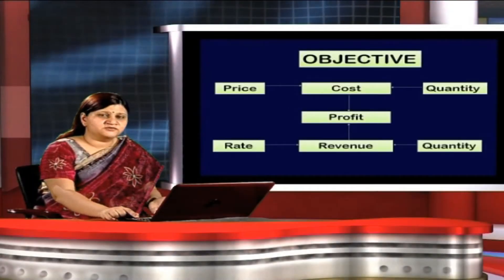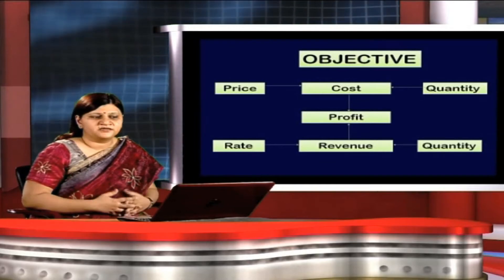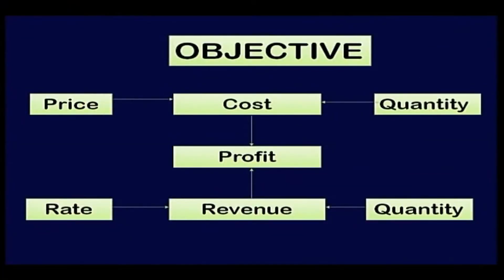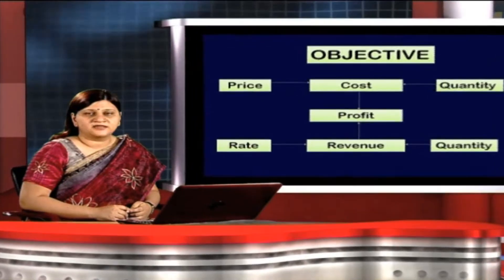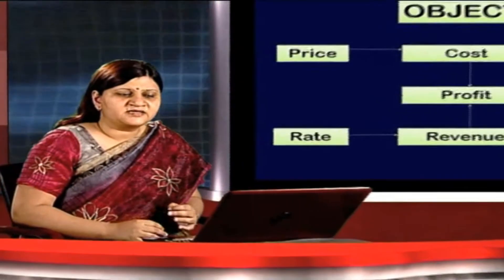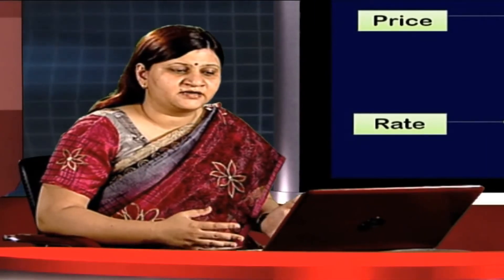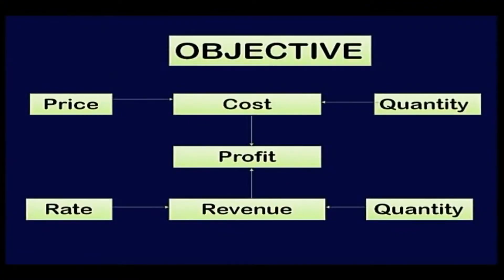The first point under introduction is the objective — why variance analysis is being done. There are primarily three data elements associated when the control aspect under management accounting is considered. Under cost, there are two factors which affect it: price and quantity. Variance analysis works upon these two factors when cost variances are analyzed. Sub-variances of quantity are also analyzed.